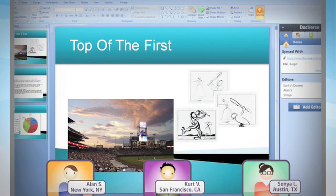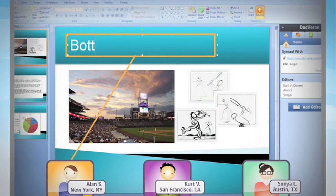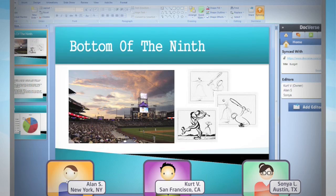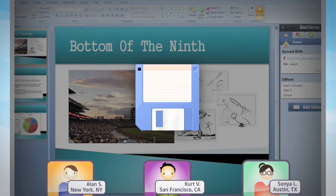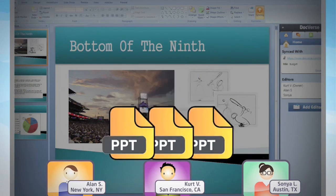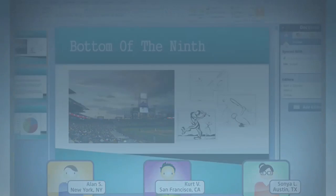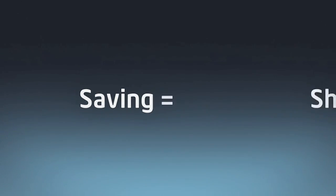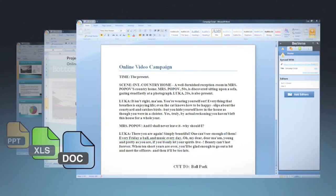If you ever make a mistake, DocVerse automatically saves every version, letting you roll back whenever you need, and all of the changes are saved and shared instantly with everyone. With DocVerse, saving equals sharing.